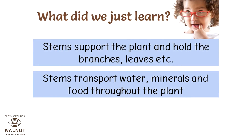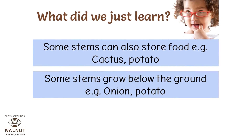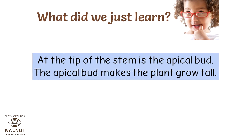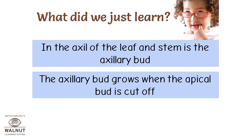What did we just learn? Stems support the plant and hold the branches, leaves, etc. Stems transport water, minerals and food throughout the plant. Some stems can also store food — for example, cactus and potato. Some stems grow below the ground — onion and potato. Branches and leaves grow from the nodes. The space between the nodes is called the inter-node. At the tip of the stem is the apical bud, which makes the plant grow tall. In the axil of the leaf and stem is the axillary bud. The axillary bud grows when the apical bud is cut off.